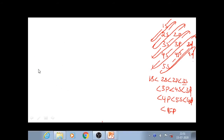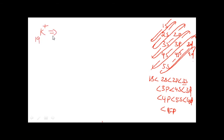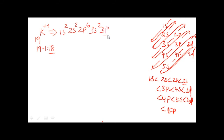For K⁺ (Z=19): plus 1 means loss of 1 electron. 19 − 1 = 18 electrons. 1s² 2s² 2p⁶ fills 10 electrons; balance 8. 3s fills 2, balance 6. 3p fills maximum 6. Configuration of K⁺: 1s² 2s² 2p⁶ 3s² 3p⁶.